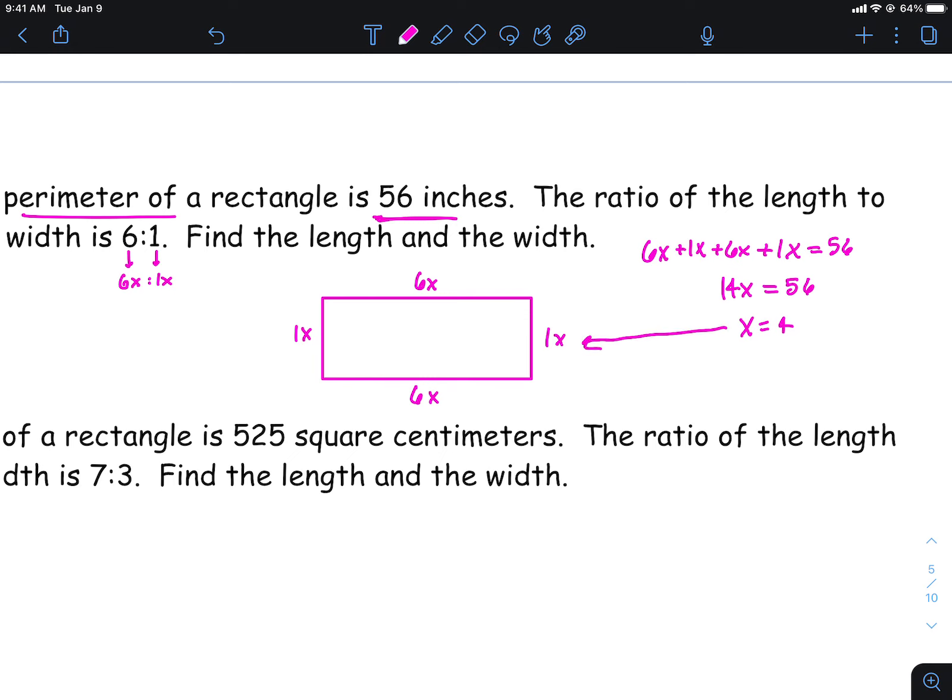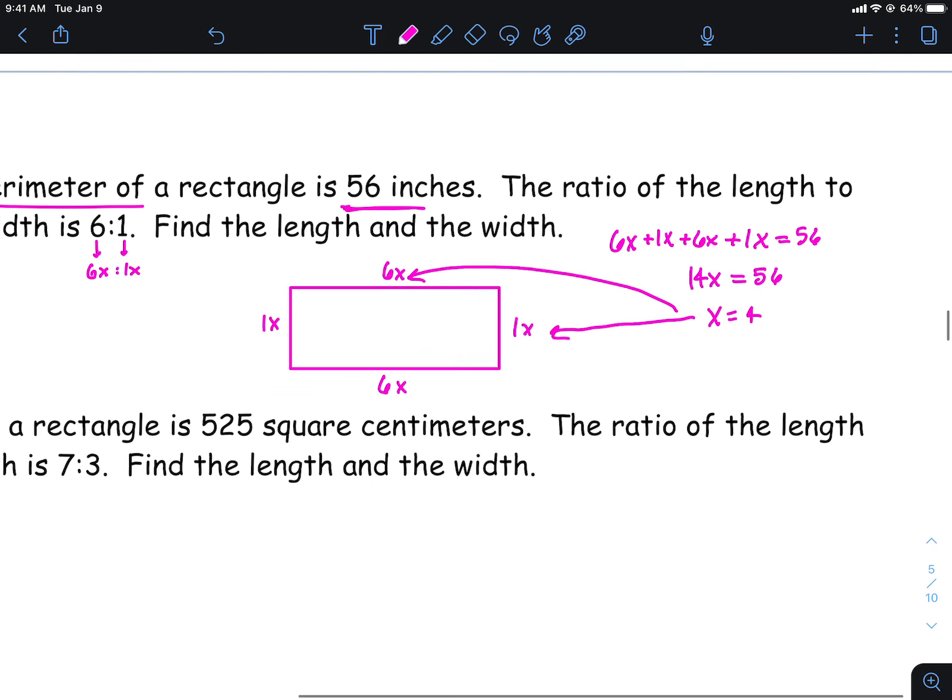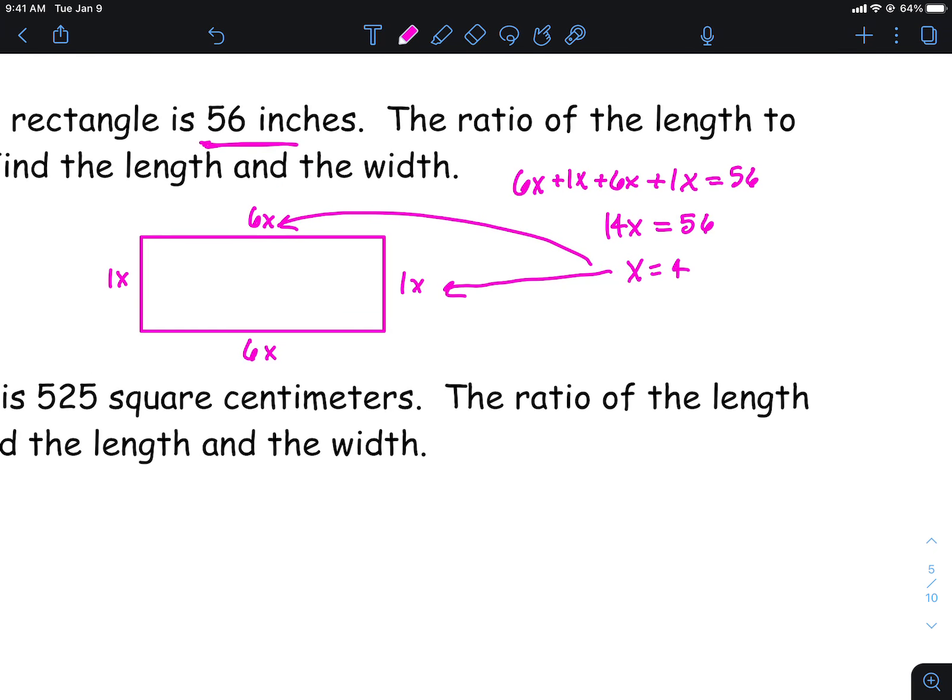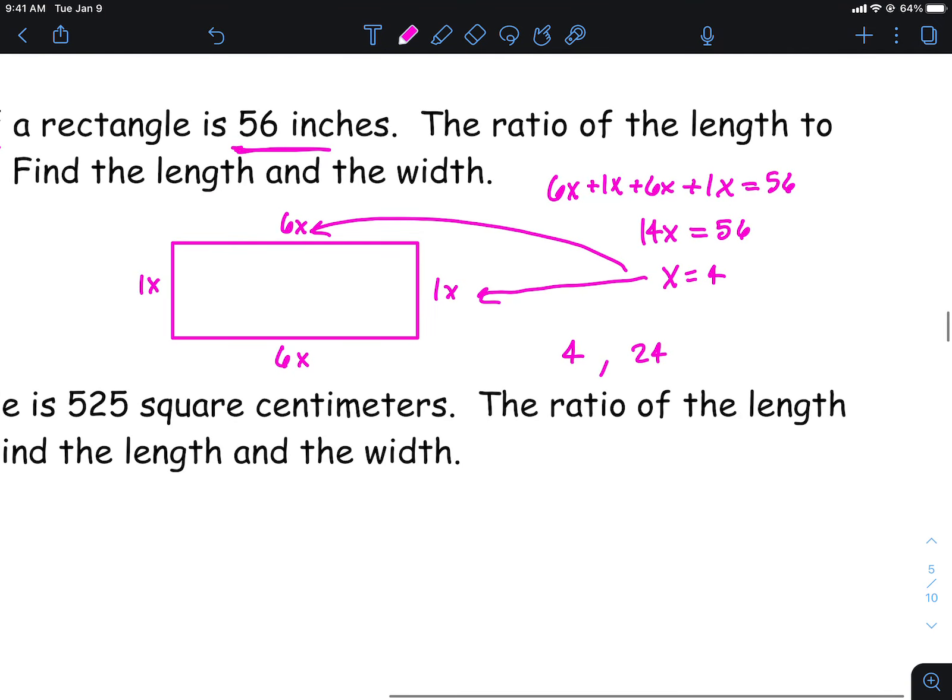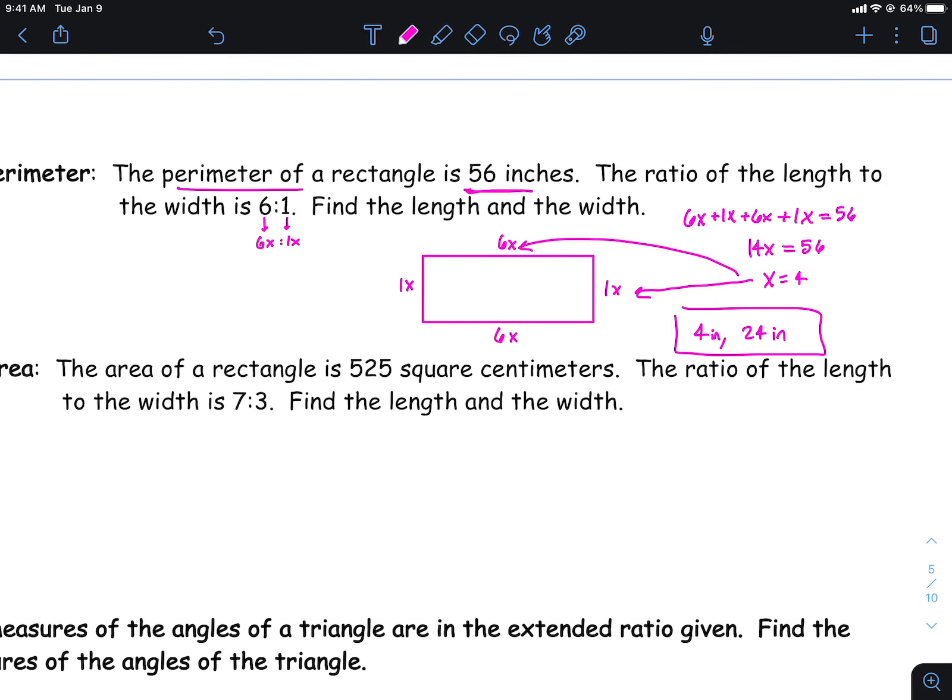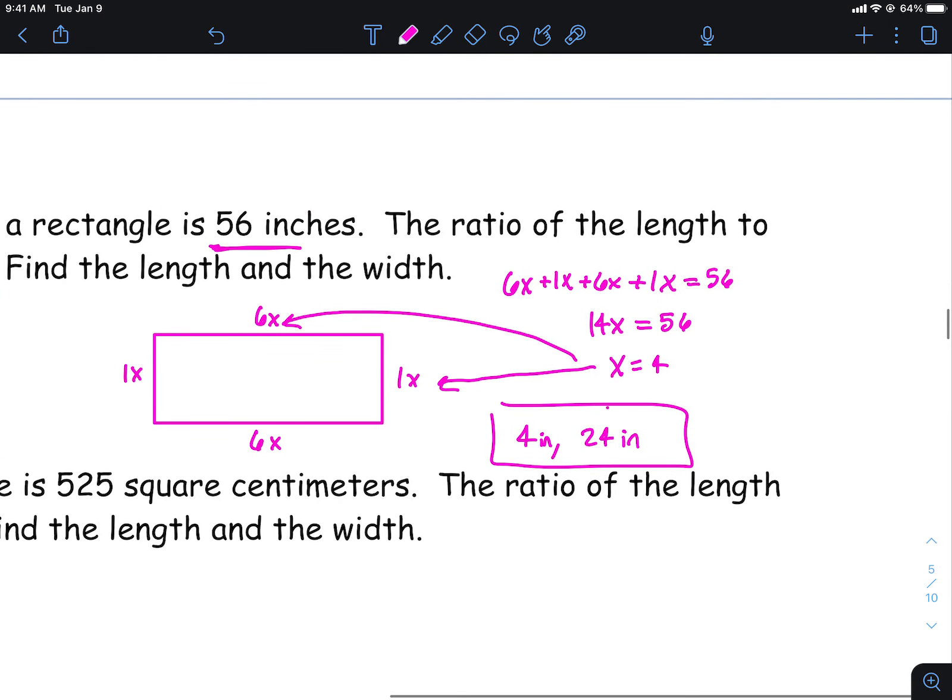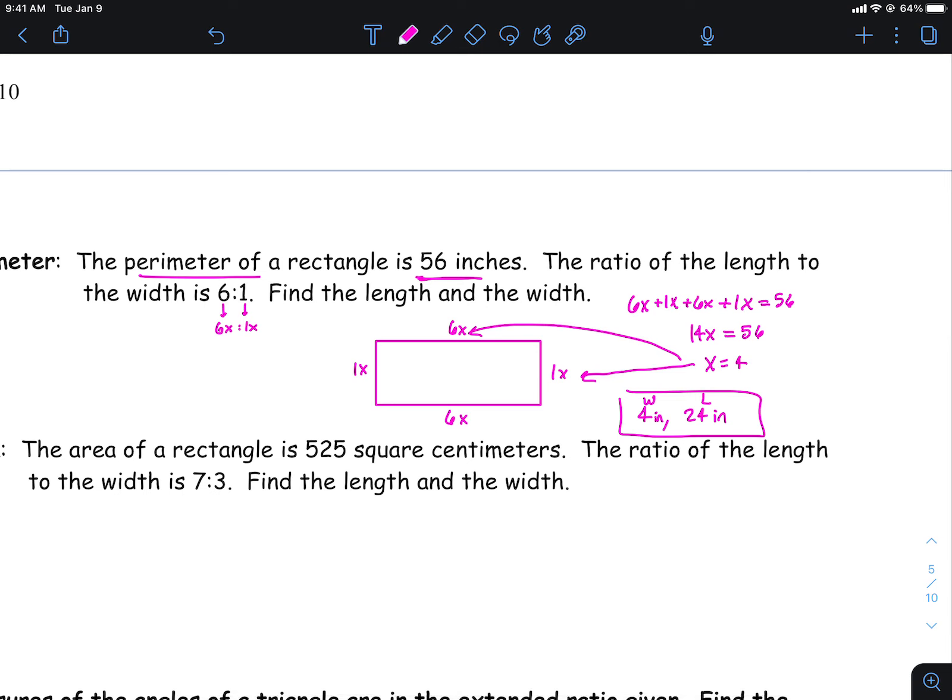So now we're going to go and take the four and plug it right back in. One times four is obviously four, and then six times four is going to be 24. And let's see here, they said that was in inches right there. So you can put inches on both of those, and those would be your dimensions there. That would be the length, and then the width. The length is 24, and then the width is going to be four inches there.